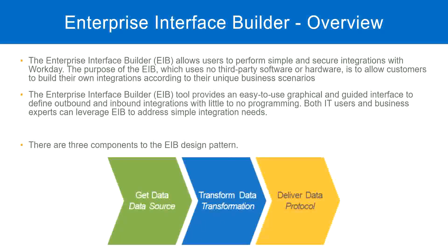These are the three components in an EIB design pattern. We are going to configure these three steps: get data — where are we going to get the data from; transformation — do we need it, configure it if yes, leave it blank if no; and deliver the data — how are we going to send it to an external system. Once we configure these three steps, our EIB is ready and we start exchanging information between Workday and an external system.